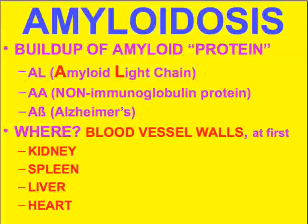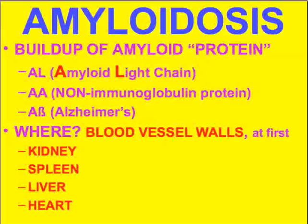Amyloid protein was mysterious for many years, but now its exact structure has been worked out. We can see its various types. The most common type is called AL, for amyloid light chain, which you can think of as a buildup of immune proteins.